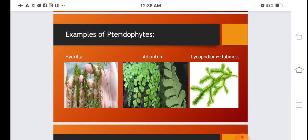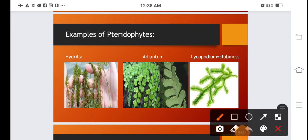Another example of pteridophytes is Hydrilla. This is Hydrilla, Adiantum, and Lycopodium. Lycopodium is also known as club moss. It is known as club moss because it resembles moss, which is a bryophyte, a group of mosses.